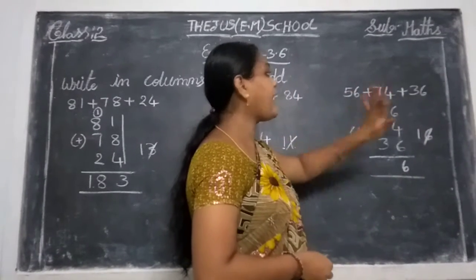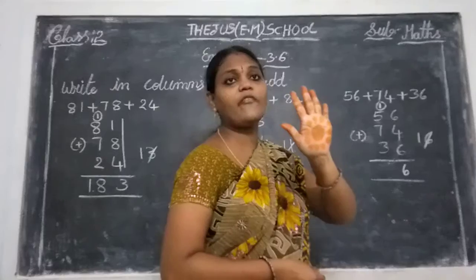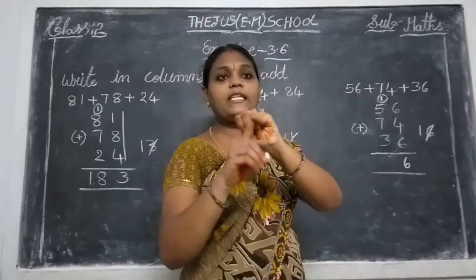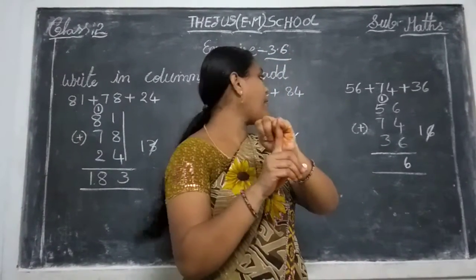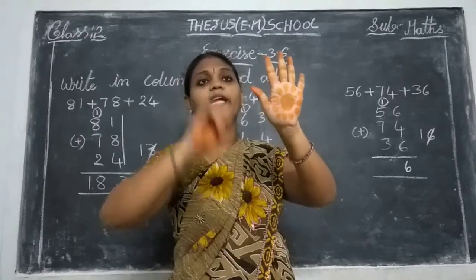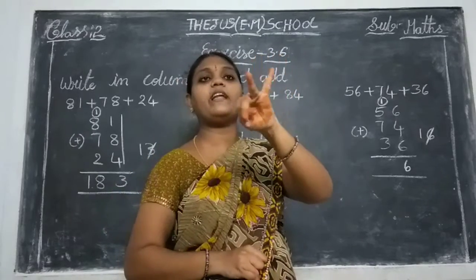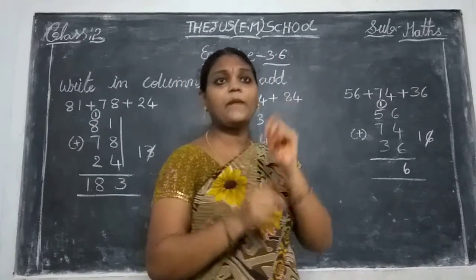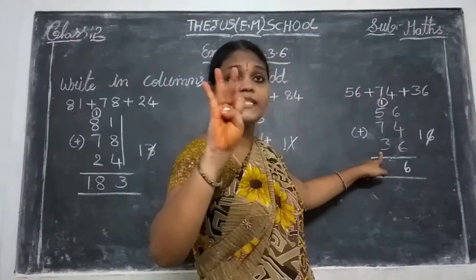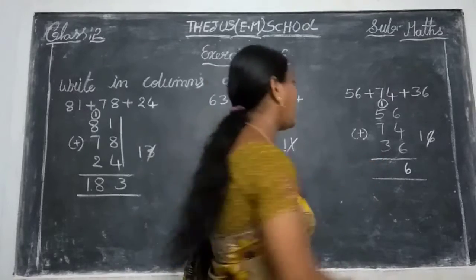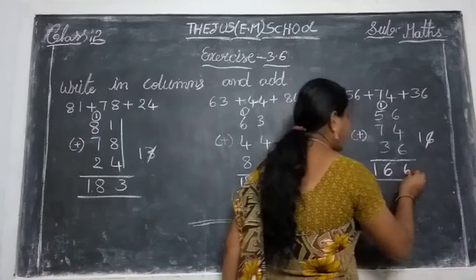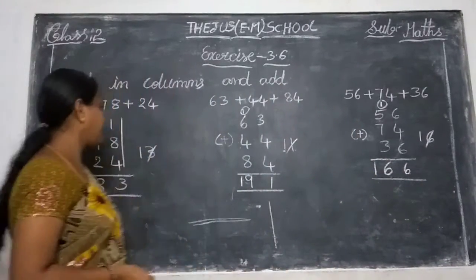Keep 1 in your mind, take 5 fingers: count 2, 3, 4, 5, 6. Keep 6, take 7 fingers: count 7, 8, 9, 10, 11, 12, 13. Keep 13, take 3 fingers: count 14, 15, 16. So 166 is the answer.